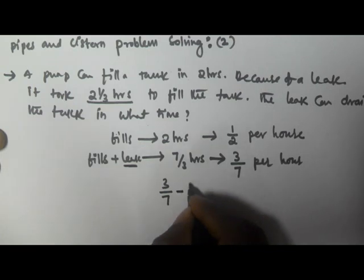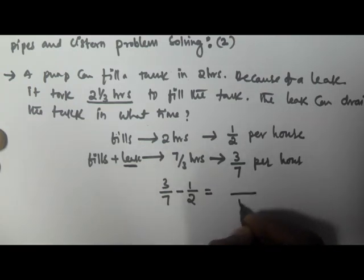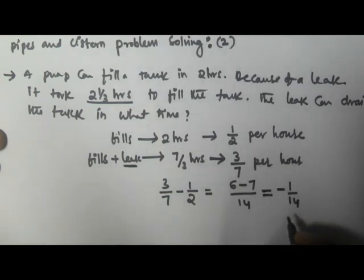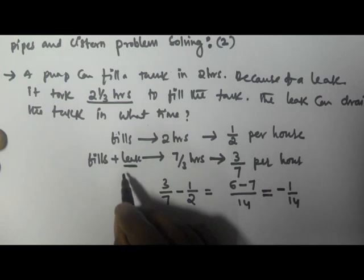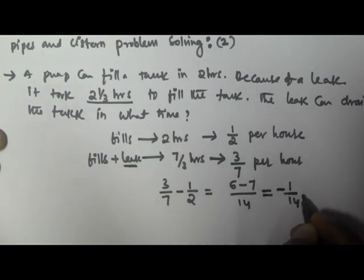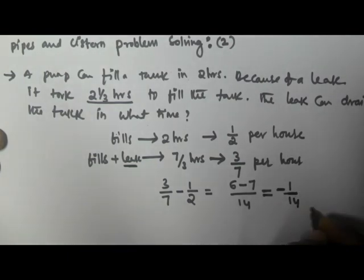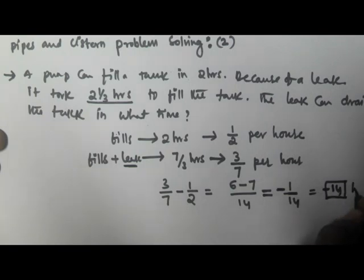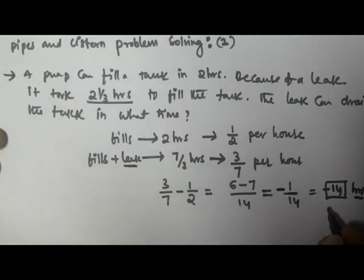Part emptied by the leak is given by 3/7 minus 1/2, which equals 6/14 minus 7/14, that is minus 1/14. The minus represents emptying. So the leak alone empties 1/14th part of the tank per hour. If you reverse this, you get 14 hours. So the leak alone will take 14 hours to empty the tank.